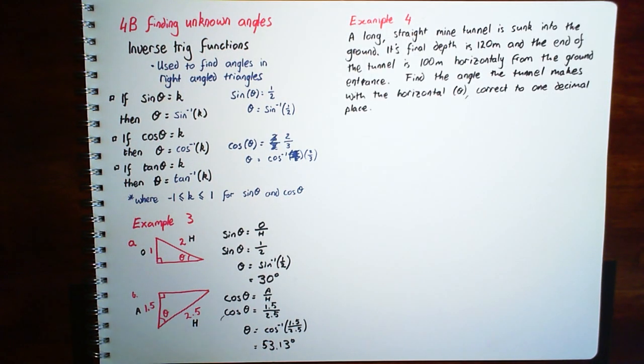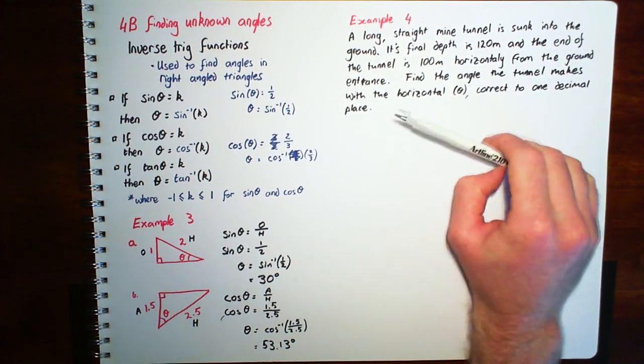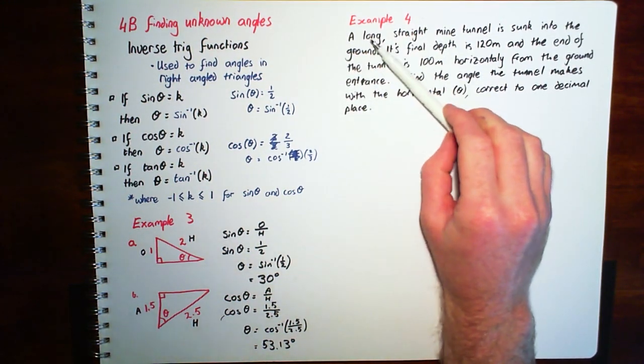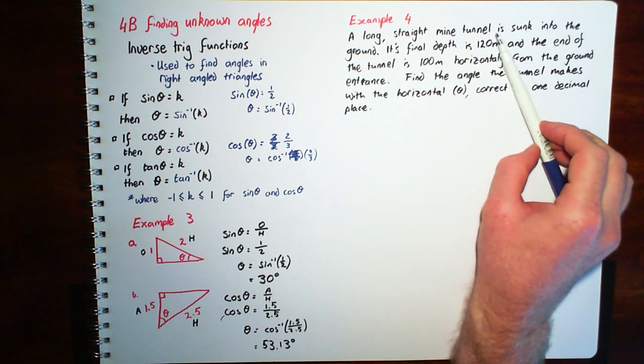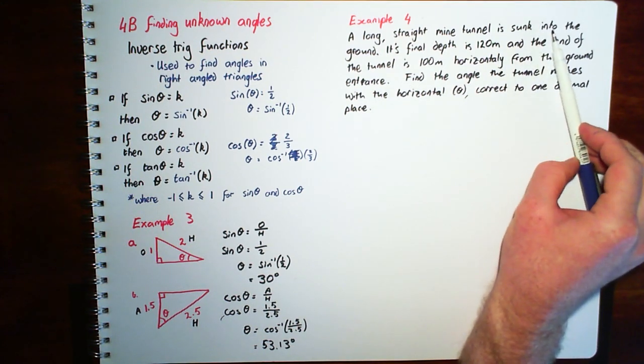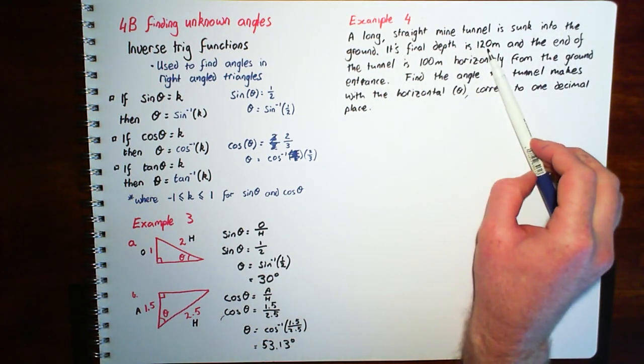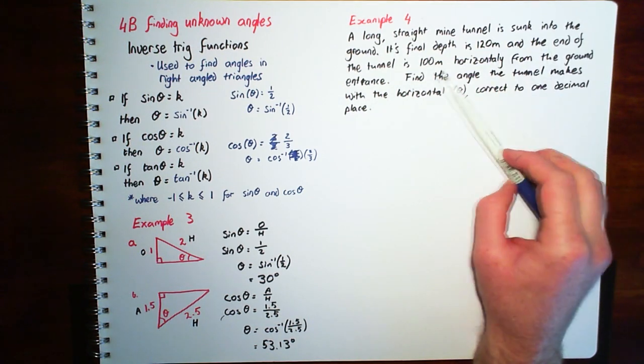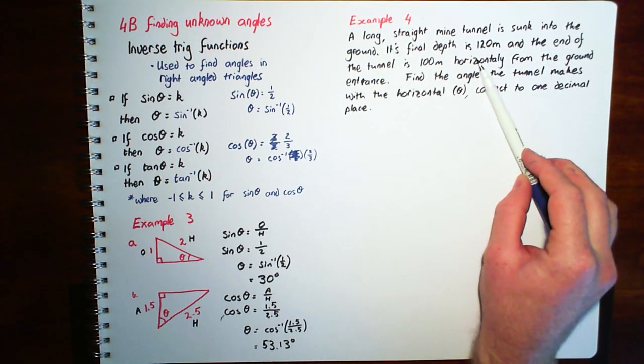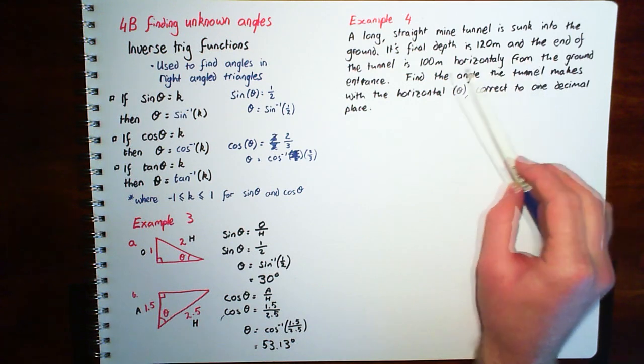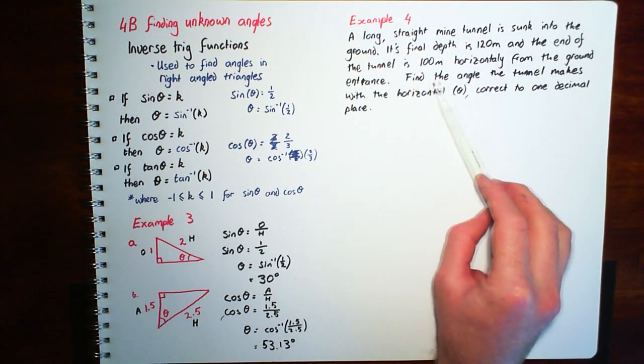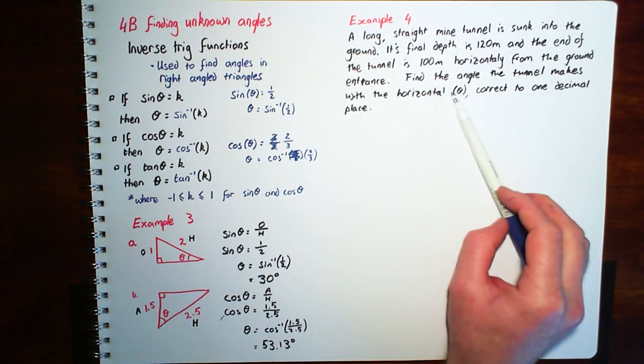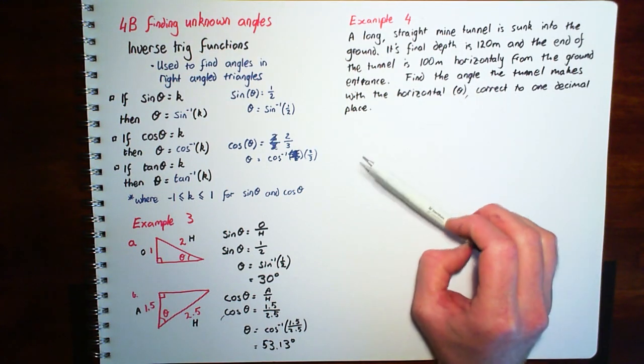Okay, so we're looking at example 4. So example 4 is kind of like an application question. We've got a long straight mine tunnel is sunk into the ground. The final depth is 120 metres and the end of the tunnel is 100 metres horizontally from the ground entrance. We're going to find the angle the tunnel makes with the horizontal theta correct to 1 decimal place.